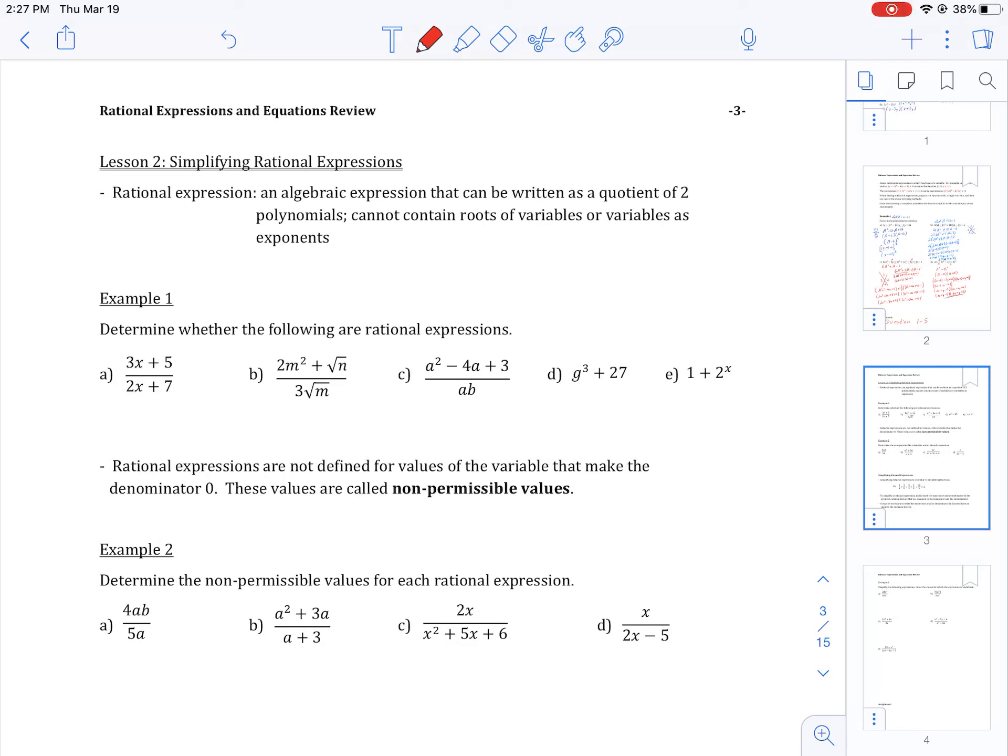A rational expression is an algebraic expression that can be written as a quotient of two polynomials. It cannot contain roots of variables or variables as exponents. Basically, it has to be a polynomial divided by a polynomial.